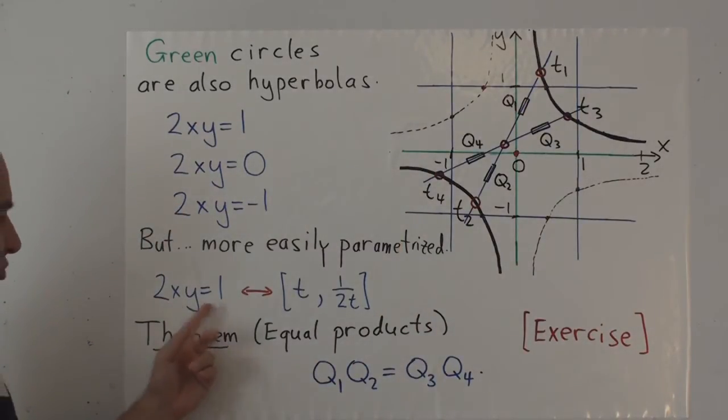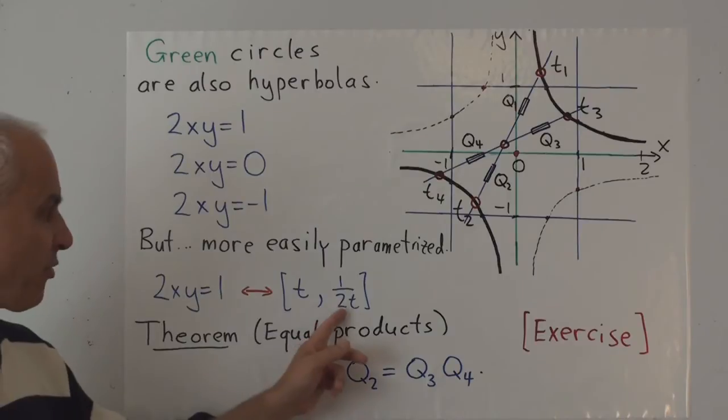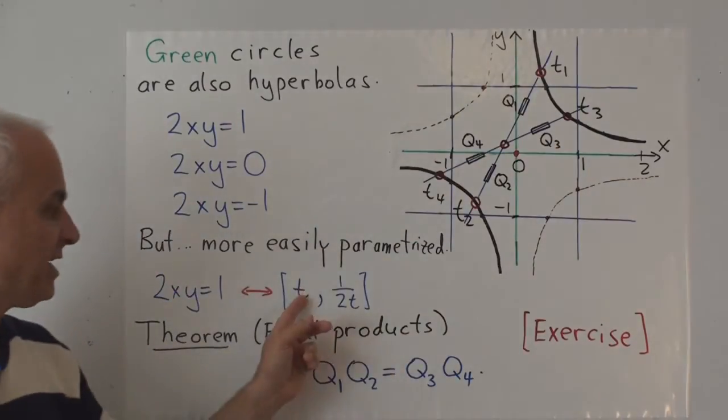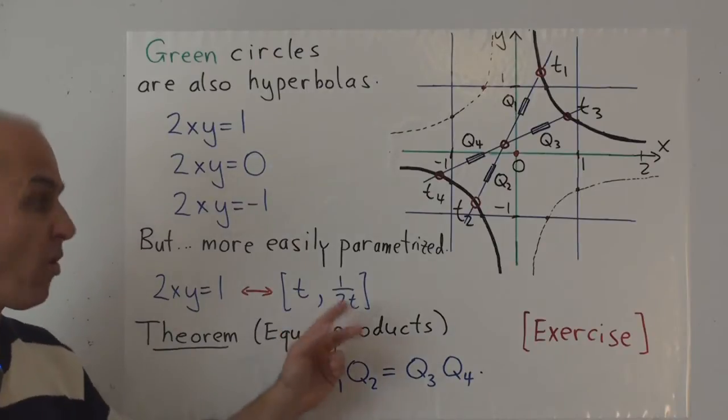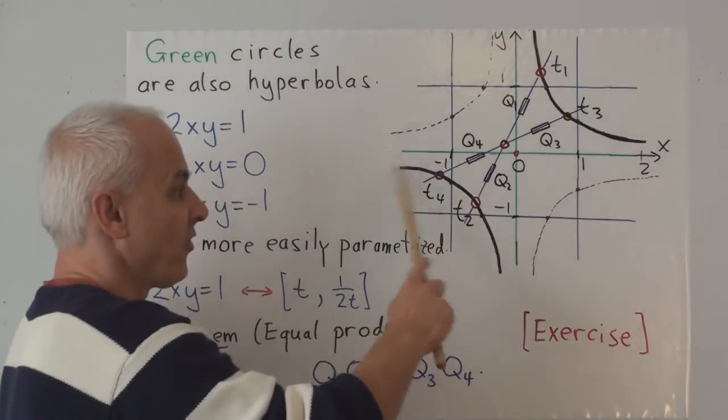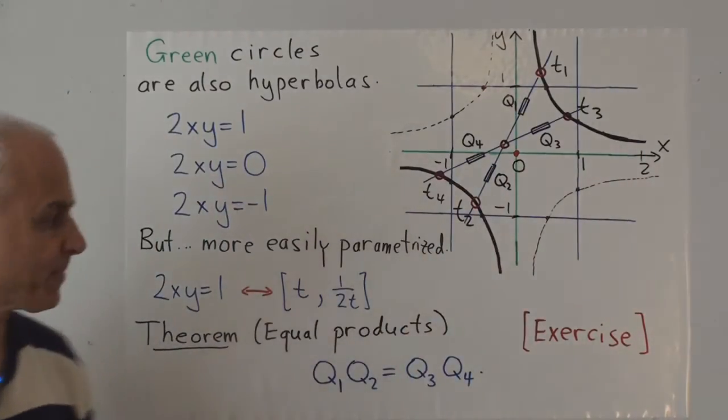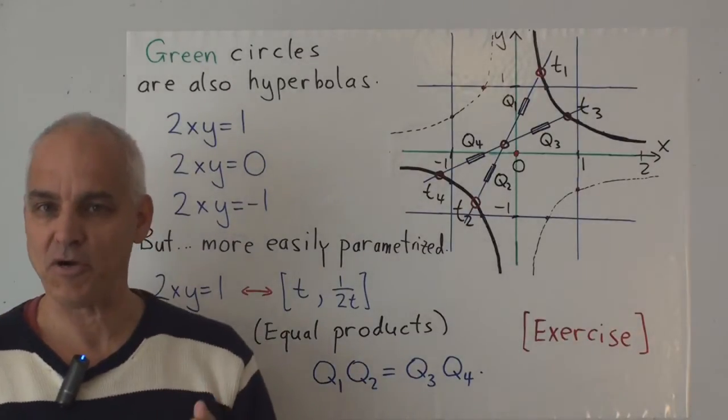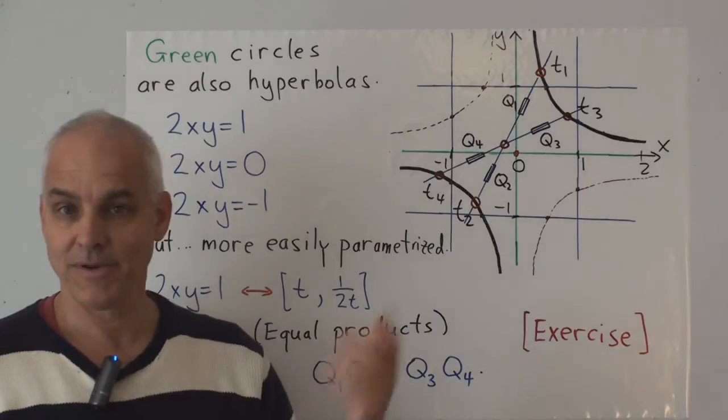we can see that we can parametrize this unit circle in a relatively simple way in green geometry. If we want to parametrize this curve, we can set x to be a parameter t. And once x is t, then we can solve for y. It's going to be 1 over 2t. So this gives a parametrization of this curve. In other words, as t varies, this pair of points traverses the curve.